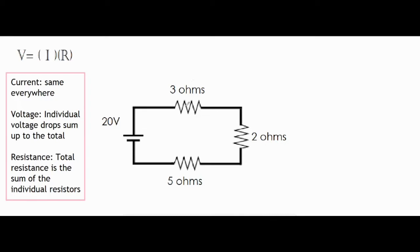Through each of these resistors: the 3 ohm resistor, 2 ohm resistor, and the 5 ohm resistor. And finally the resistance—the total resistance is the sum of the individual resistors.